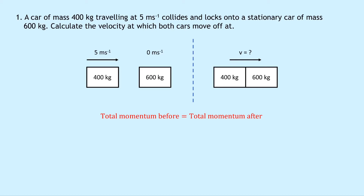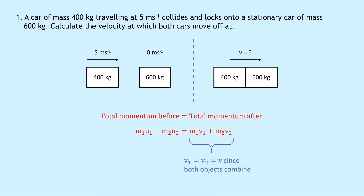Writing this as an expression: m1·u1 + m2·u2 = m1·v1 + m2·v2. We can simplify the right-hand side because v1 equals v2, which we call simply v, since both objects combine and have the same speed. This lets us rewrite it as m1·u1 + m2·u2 = (m1 + m2)·v, factorizing v outside the brackets.